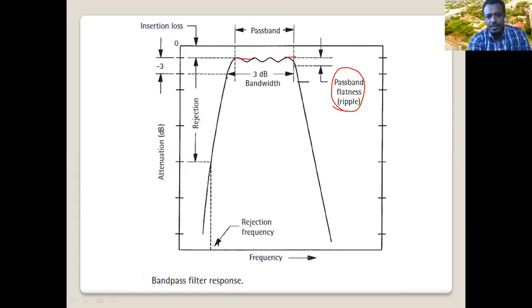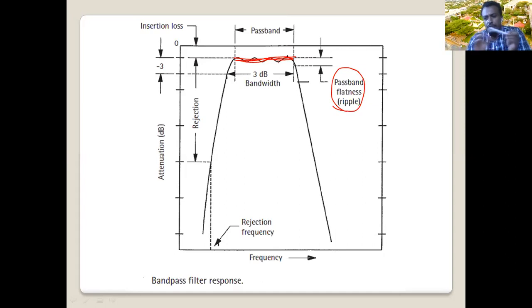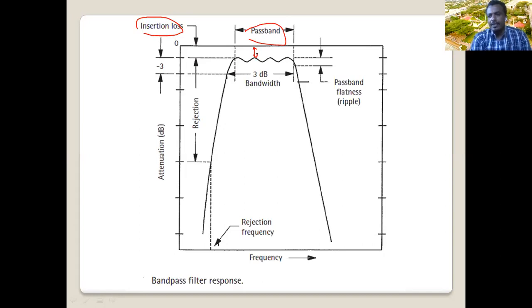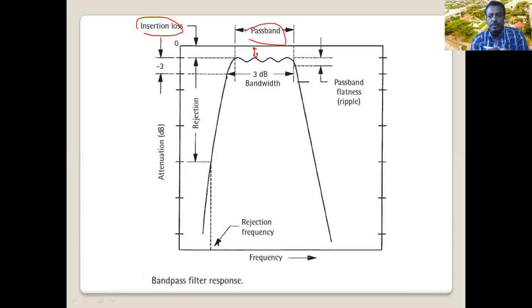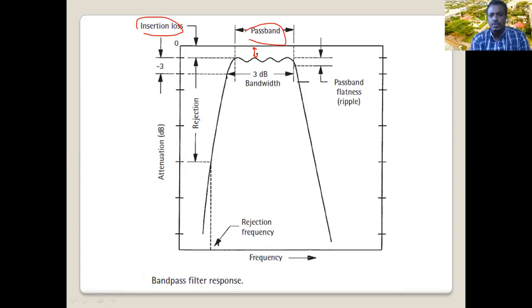The ideal case is a flat pass band where all frequencies pass through the filter with uniform attenuation, causing no distortion. Insertion loss is the attenuation of frequency in the pass band. Ideally when your frequency is inside the pass band you expect no attenuation, but in practice the signal passes with some small loss — that loss we call insertion loss.